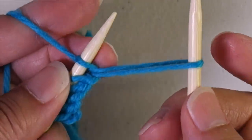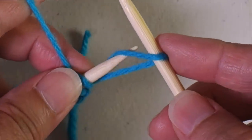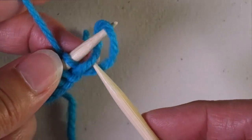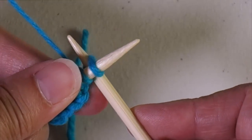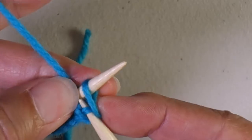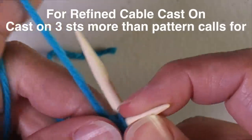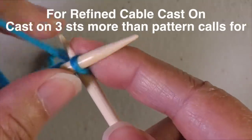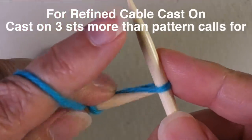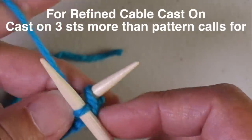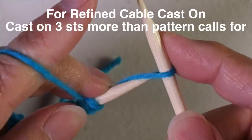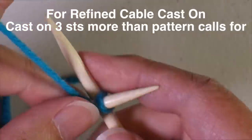So I can again make this loop as big as I need to make it, insert it in, bring my working needle between the two stitches, then tighten up and then I can keep going. So I want to create on the needle, I want to cast on three stitches more than whatever my pattern says. So if it says to cast on 15 stitches, I want to cast on 18. If it says 20, I want 23.